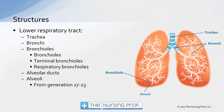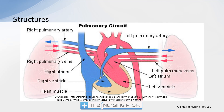Alveoli branch off from alveolar ducts. If you think of a grape-like cluster of alveoli, there's a tube in the middle — that's the alveolar duct going down to the alveolus itself. So there's a lot of branching before we reach our alveolus.